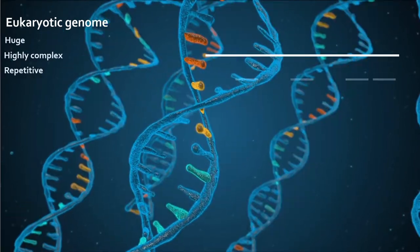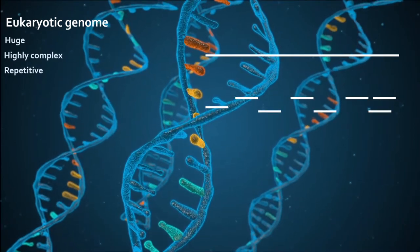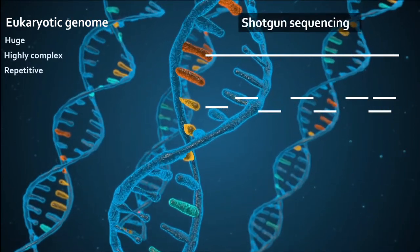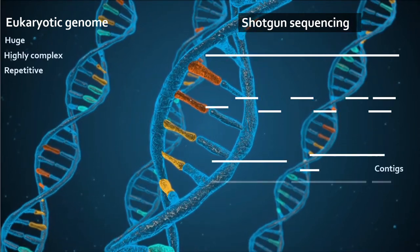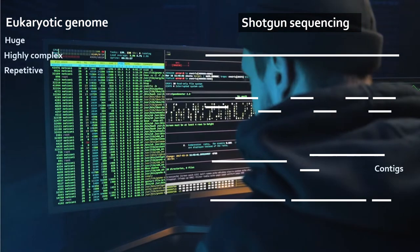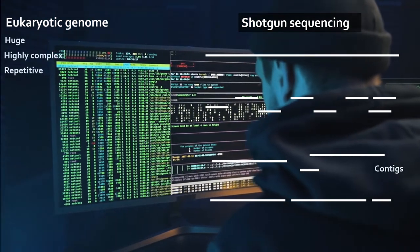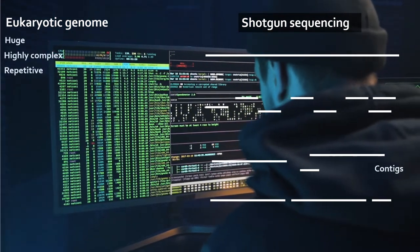So the genome is first chopped into smaller fragments which are then sequenced. This is known as shotgun sequencing. Assembling these short fragments into contigs, scaffolds, and whole genomes is a cumbersome exercise that requires huge computational resources, algorithms, and is often not accurate.